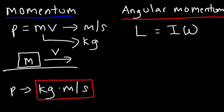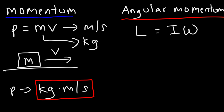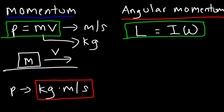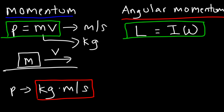You might be wondering why they use the letter L for angular momentum — I really don't know why they did that, but that's just one of those things you need to commit to memory. You can see the similarities between this equation and the linear momentum equation. Inertia is like the rotational equivalent of mass, and angular velocity is like the rotational equivalent of linear or tangential velocity.